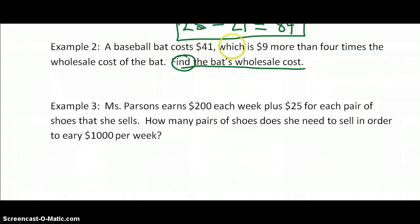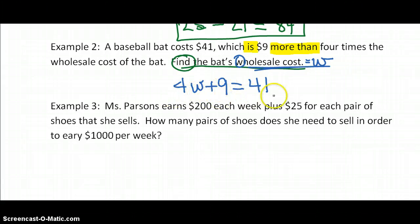A baseball bat costs $41, which is, there's our equal sign, $9 more than four times the wholesale cost of the bat. So is, $41 is, so whatever comes after the word than is going to go in front of nine. It always comes first. More than four times the wholesale cost. We failed to say what we're solving for. Let's let W equal our wholesale cost. So four times the wholesale cost, it's nine more than four times.